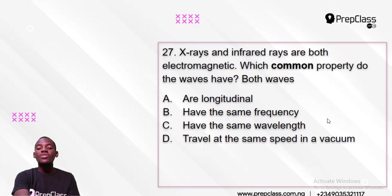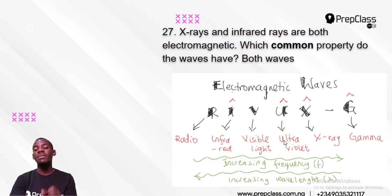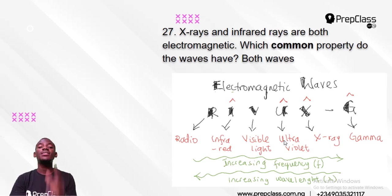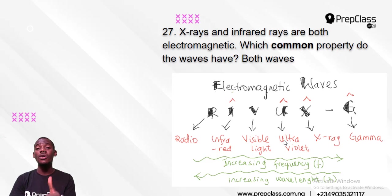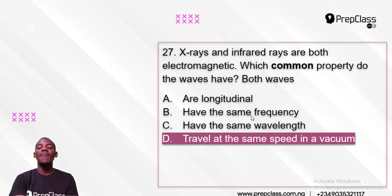The only correct option is D: they travel at the same speed. Because they are all electromagnetic, they all travel at the speed of light — 3 × 10⁸ metres per second. That is actually 300 million metres per second, and that is the speed of all electromagnetic waves, of which visible light is one. They travel at the same speed in a vacuum. That is the answer.